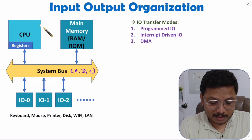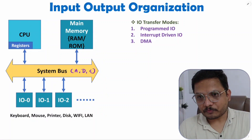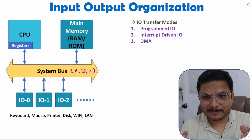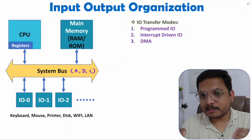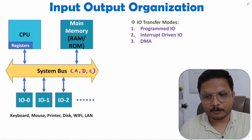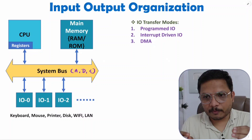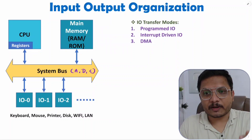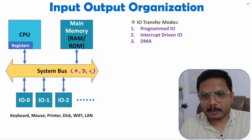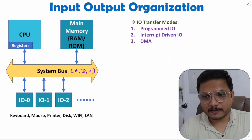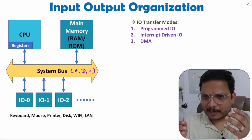Via the system bus, IO devices can transfer data with the CPU, as well as IO devices can transfer data with main memory. That is the basic architecture. Now there could be a question: what are the complexities in terms of interfacing of IO devices with CPU? First of all, you will have to understand the speed differences between CPU, main memory, and IO devices.